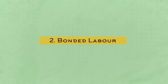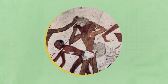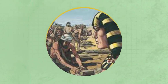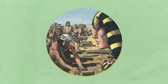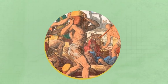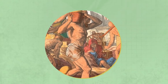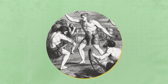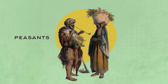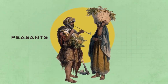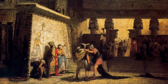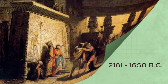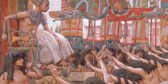Number two: bonded labour. Self-sale into slavery was also something that happened in ancient Egypt. This usually occurred if someone found themselves in too much debt to shift and, as a last act of desperation, would sell themselves and their children into slavery in order to wipe their debt. This could happen to anyone at any level of ancient Egyptian society, but peasants would sometimes even sell themselves for food or shelter. This was particularly common in the First Intermediate Period and Middle Kingdom era, 2181 to 1650 BC, where women were frequent victims of this type of slavery.